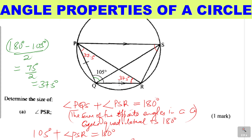Having done that, we can fill another angle. We got angle PSR as 75 degrees. We have two parallel lines: PS is parallel to QR, and PR is a transversal. So angle SPR and angle QRP are alternate angles. These angles are equal, so angle SPR is also 37.5 degrees, because alternate angles in a transversal are equal.